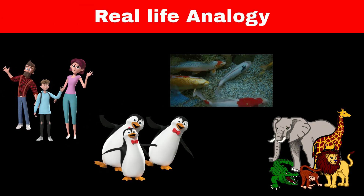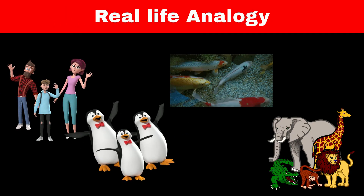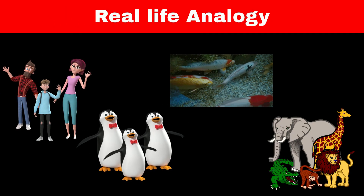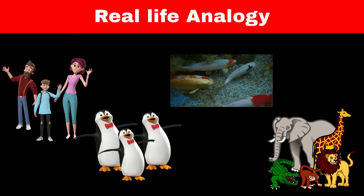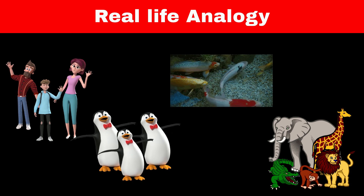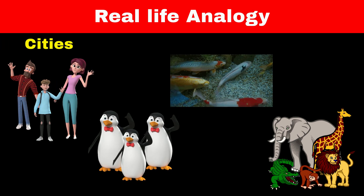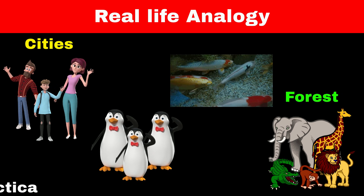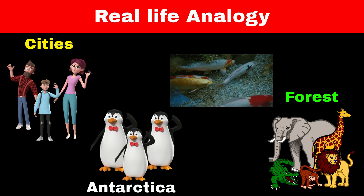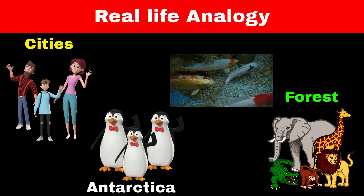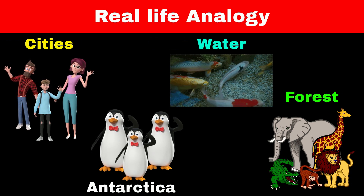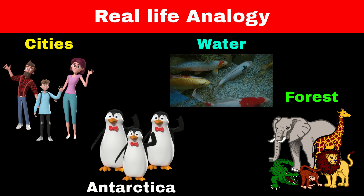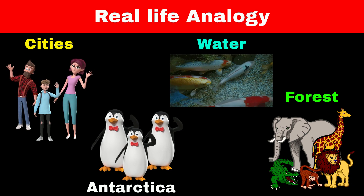Think of them as the way we group animals based on their similarity. Similar types of animals live in the same place. For example, humans live in cities, wild animals live in forests, penguins make their home in Antarctica, and fish live in water. Why separate them this way? To avoid chaos and conflict.